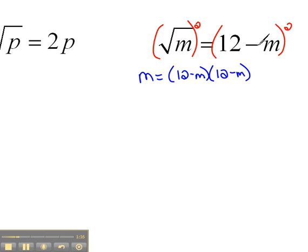Now if you can do that in your head, that's great. If not, write it out and don't miss that step. So this would be m equals 12 times 12 would be 144, 12 times negative m would be negative 12m. And then distributing our negative m, negative m times 12 would be negative 12m, and negative m times negative m would be positive m squared.